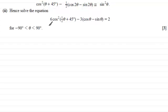I can see that if we multiply through by 6 here, we're going to have 6 times cos²(θ + 45°) minus 6 multiplied by ½, let's just put that half in brackets, times the cosine of 2θ - sin 2θ is identical to 6sin²θ.